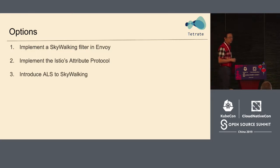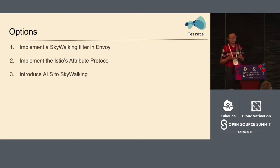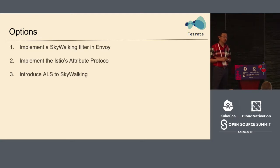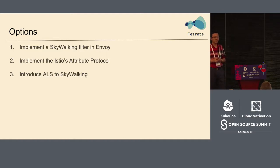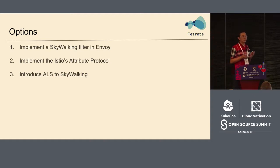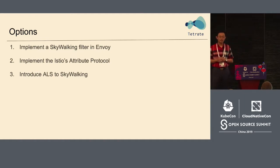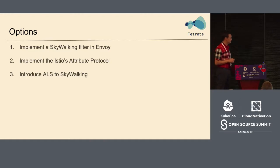The second option is to implement the Istio attribute protocol, which is quite complex as mentioned. It's complex, but not mission impossible — it's just a protocol. However, if we implement the Istio attribute protocol, the filter is still working. The Istio filter probably cannot be removed, and the impact on latency and other issues are still there. The third option is ALS.